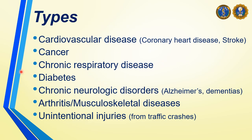There are many different types of NCDs. First, cardiovascular disease, cancer, chronic respiratory disease, diabetes, chronic neurologic disorders — examples of which are Alzheimer's disease and different types of dementias. Next, arthritis and other musculoskeletal diseases. And lastly, unintentional injuries brought about by motor vehicular crashes or MVCs.